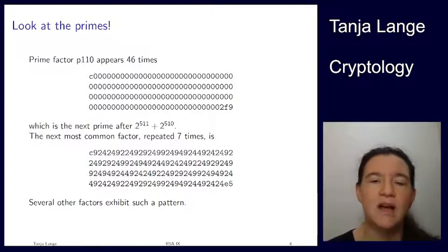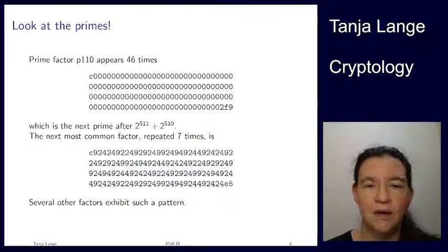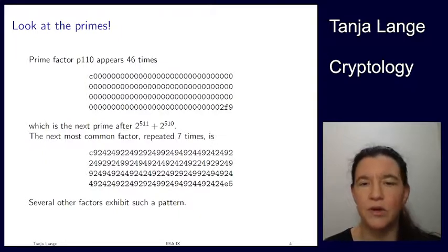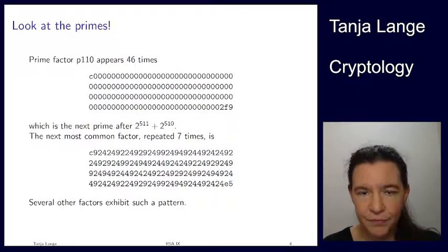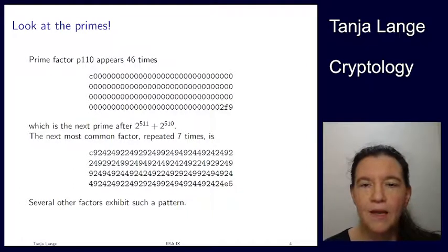Other than that, you get this prime as the next prime after taking 2 to the 511 plus 2 to the 510. So all the numbers perfected were 512 bit primes. So these were somewhat older keys where the n was 1024 bits. And so each of the primes had 511 bits, 512 bits, top 2 bits set.